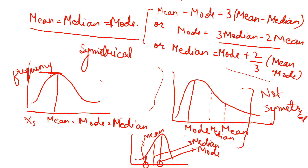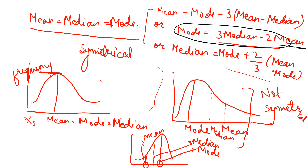All three rearrangements of this relation are equally valid — it's just the same relation with different terms isolated. The most commonly used form, and the one we generally write as the formula, is: mode equals 3 median minus 2 mean, or equivalently, 3 median equals 2 mean plus mode.